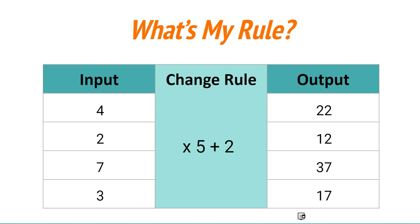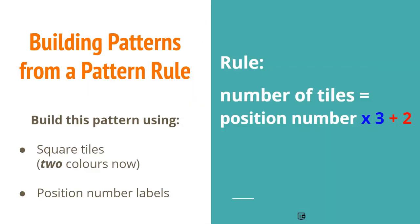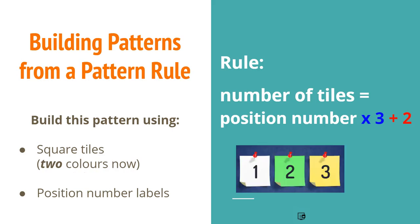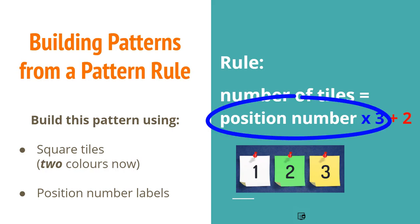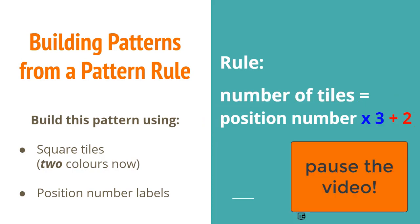So what I'd like you to do now is build that pattern rule, but this time you're going to use two colors of square tiles — maybe blue and red. You still need those position number labels, and I'd like you to build position one, position two, and position three, where the rule is the number of tiles at each position is equal to the position number multiplied by three plus two. Pause the video and give that a try.